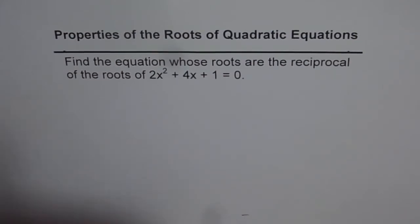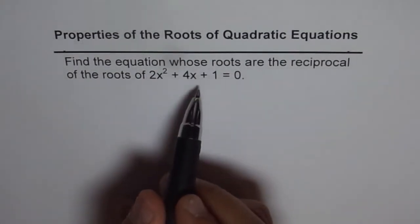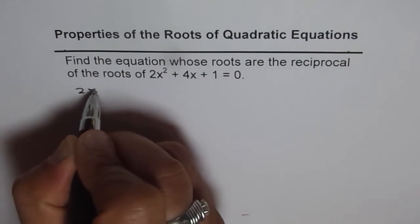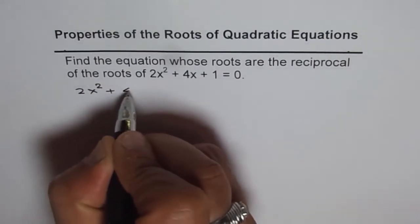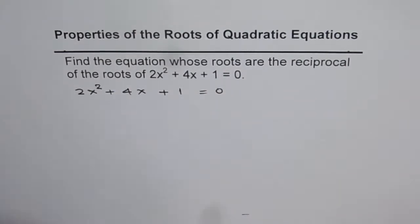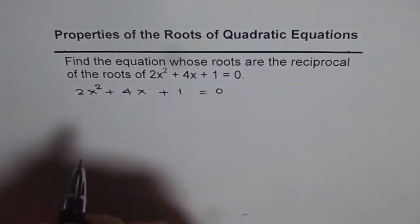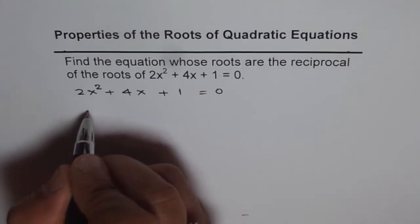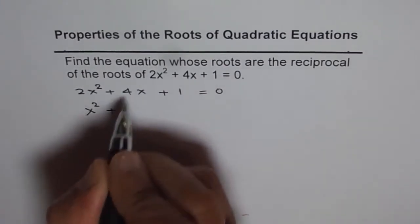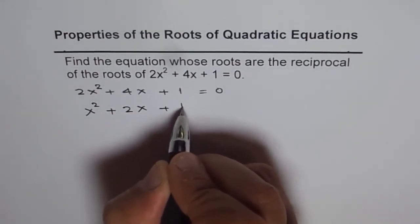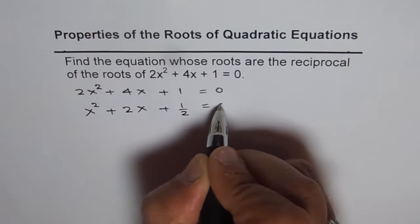So let's try to find sum and product of the roots of the given equation first. The equation given to us is 2x² + 4x + 1 = 0. We can write it in terms of sum and product. We should now divide by 2. Then we get x² + 2x + 1/2 = 0.